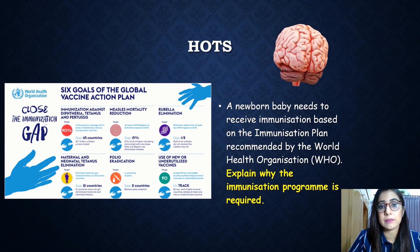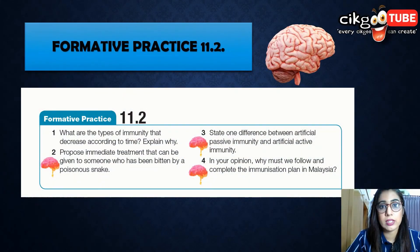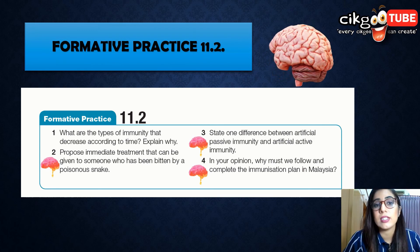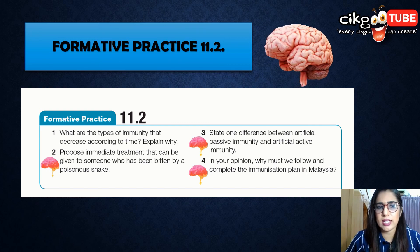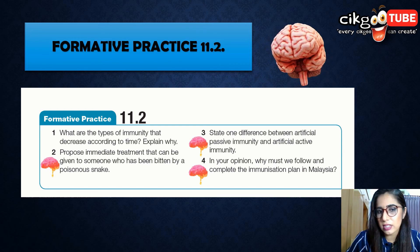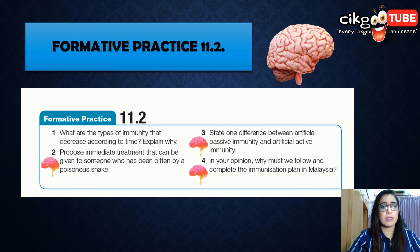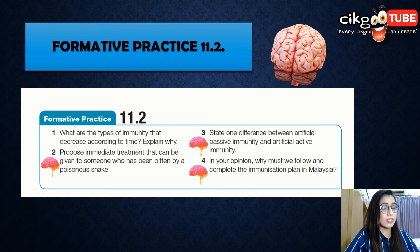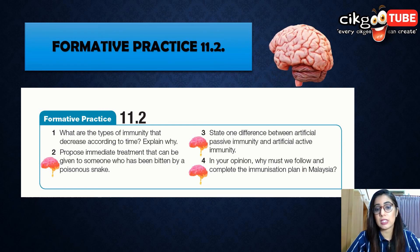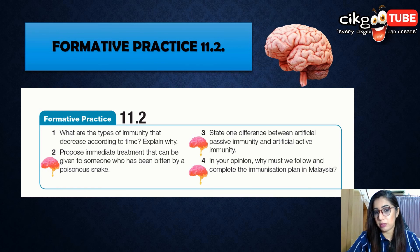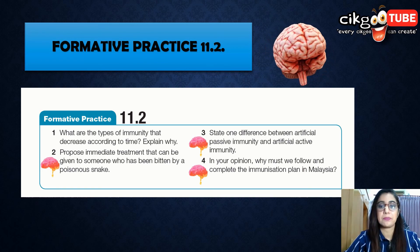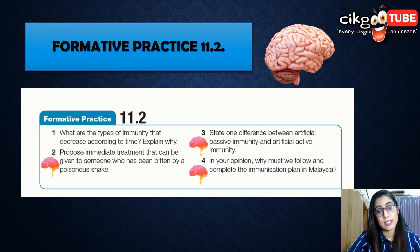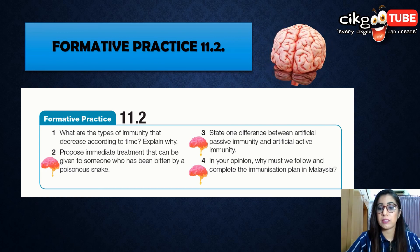Therefore, babies must be given immunization to acquire immunity against these diseases. Once done with all of that, answer questions from Formative Practice 11.2 on page 209. Questions include: what types of immunity decrease over time and why; what immediate treatment can be given to someone bitten by a poisonous snake; one difference between artificial passive immunity and artificially acquired active immunity; and why we must follow and complete the immunization plan in Malaysia.